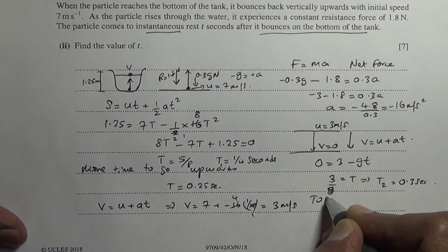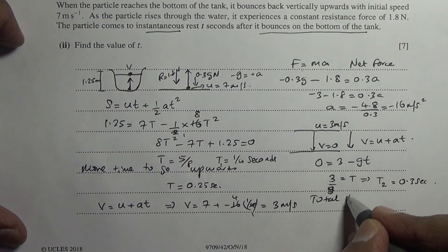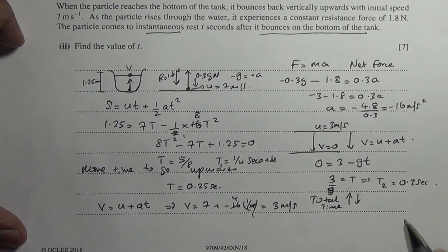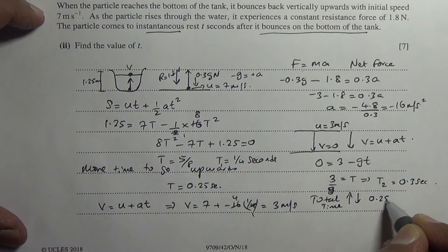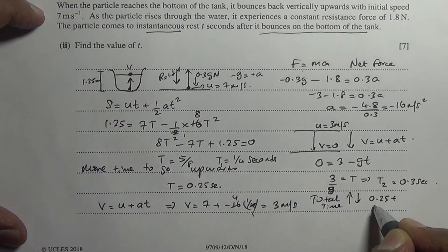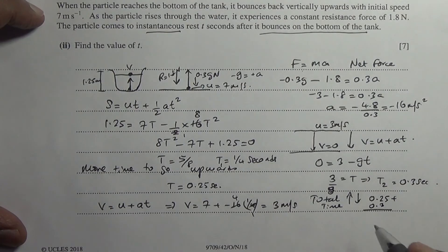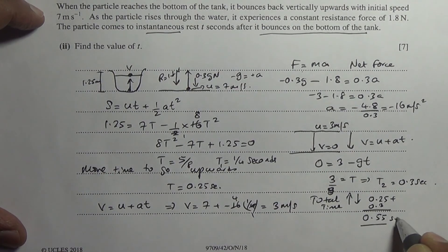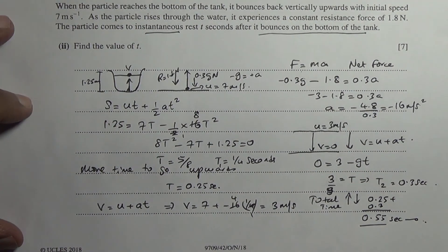The total time for the particle to go up and then come back down is 0.25 + 0.3 = 0.55 seconds. This is our final answer. Take care.